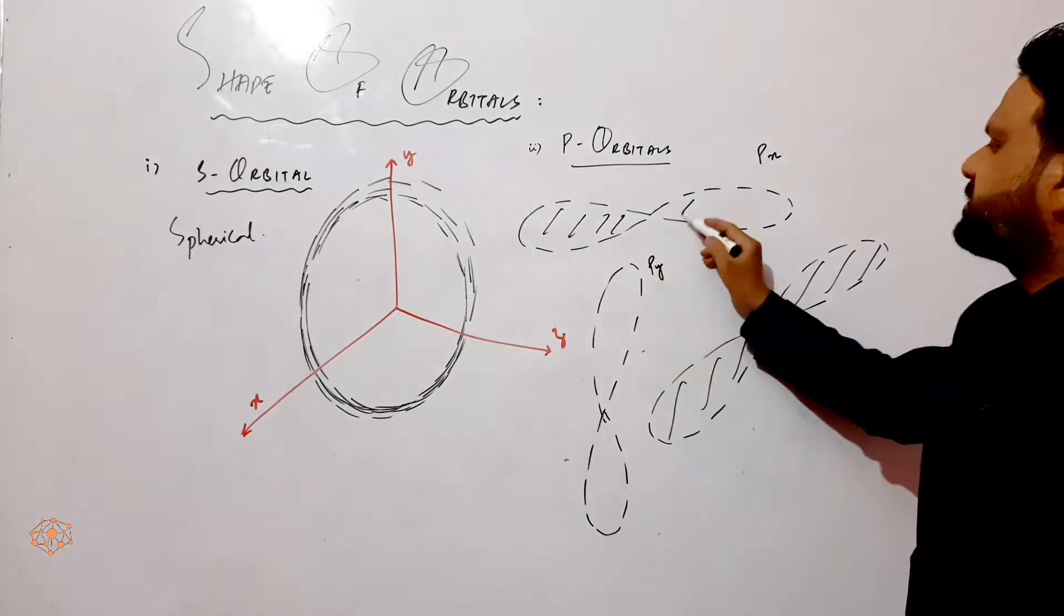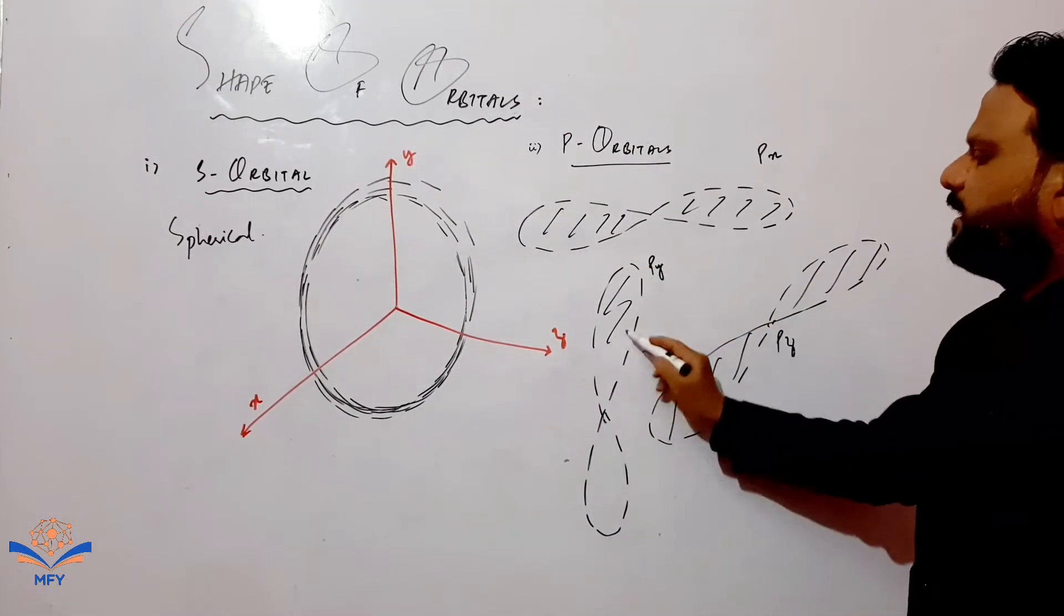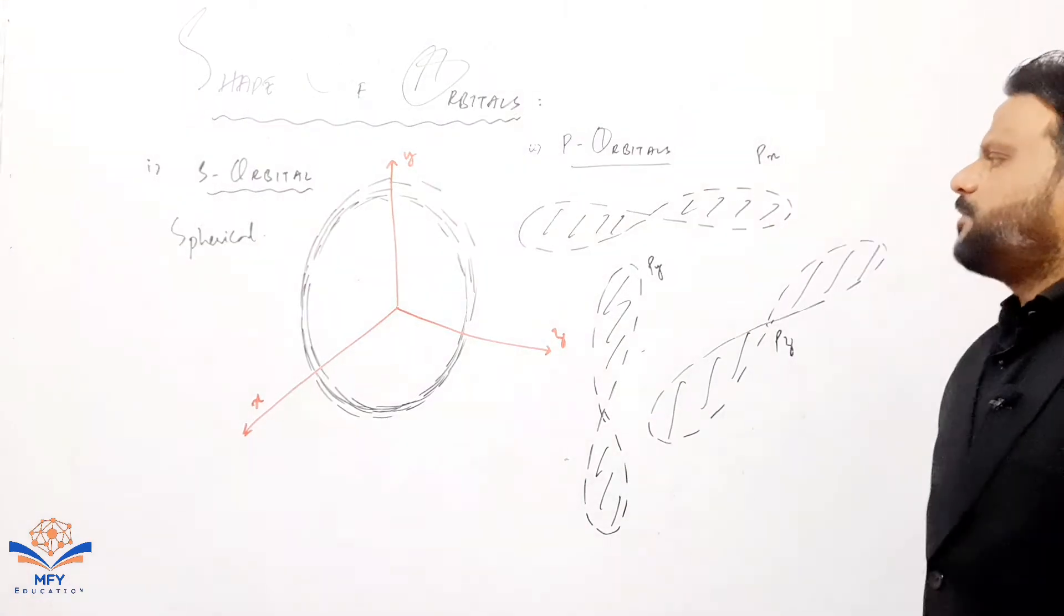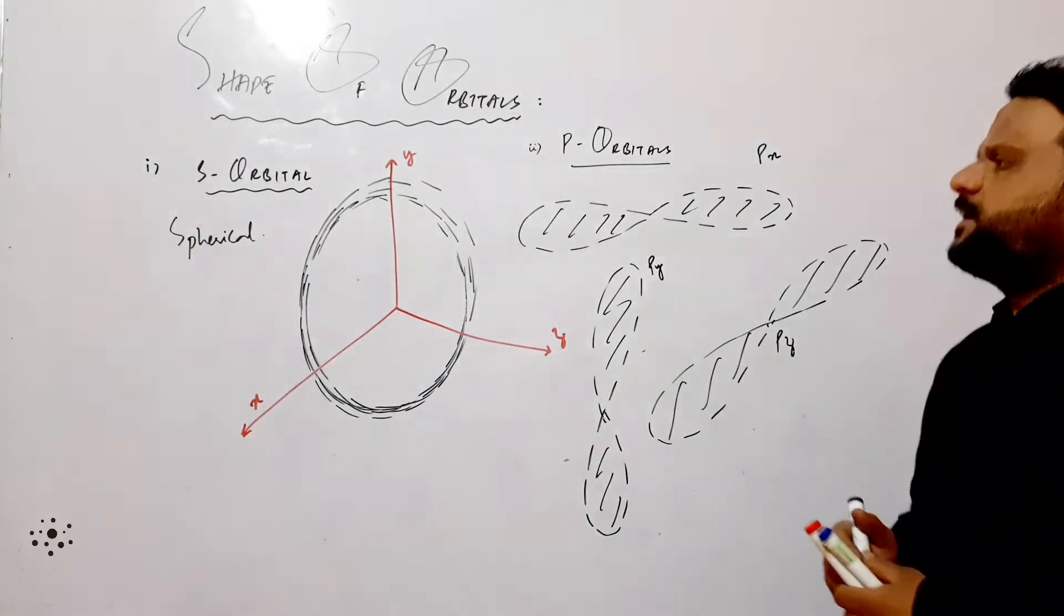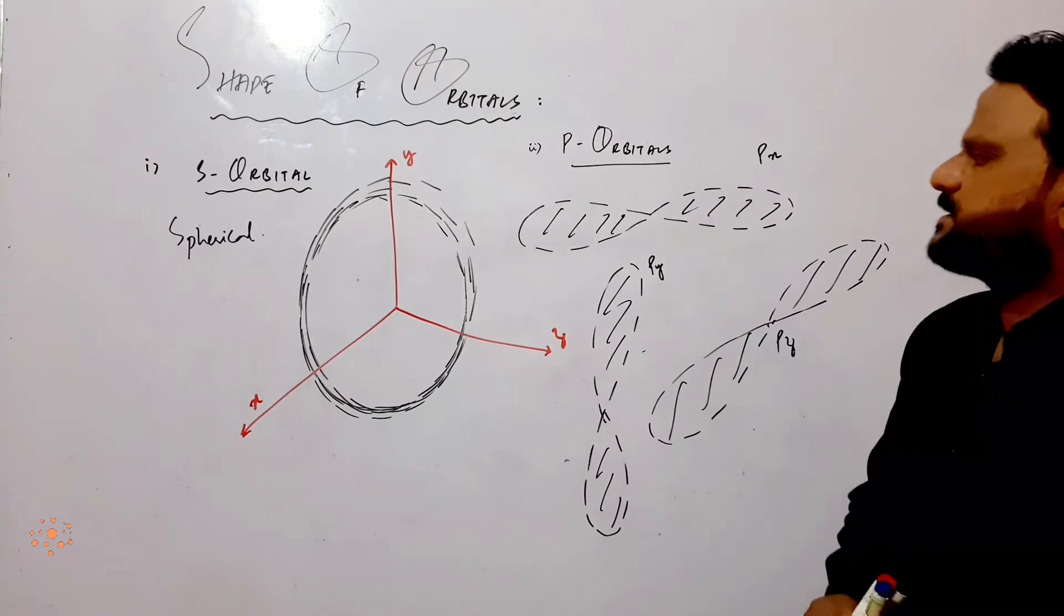This is px orbital and this is py orbital. These are the structures of orbitals - s orbitals and p orbitals.